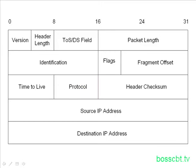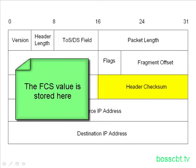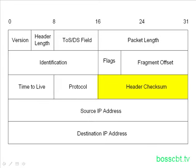After that is the header checksum. Earlier I mentioned there's no trailer on the IP packet. In Ethernet, the frame check sequence is in the trailer, but here it's in the header. This value — the FCS — is stored in the header checksum and is only used to determine if errors have occurred in the IP header itself. It doesn't check the integrity of the data it carries, so it's essentially a self-check of the header.